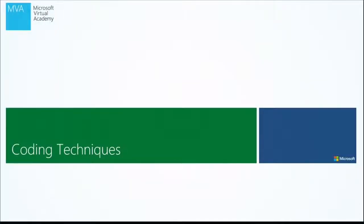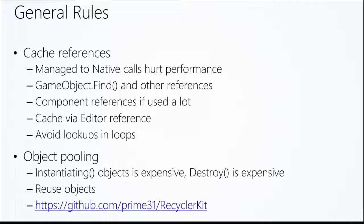Let's talk about coding techniques next. In Unity you can do all sorts of coding optimizations. Remember that inside Unity your code goes from managed code over to native code and back again. So if you tell Unity you want to do something with a GameObject's transform, it's going to the native engine, getting an object, and sending it back. Anytime you cross those boundaries you hurt performance. We'll show a way to cache those up front.